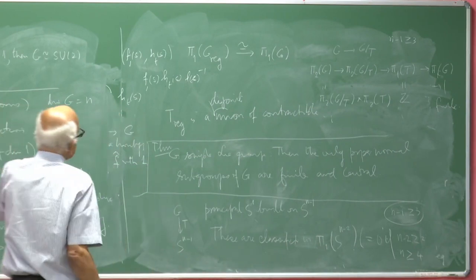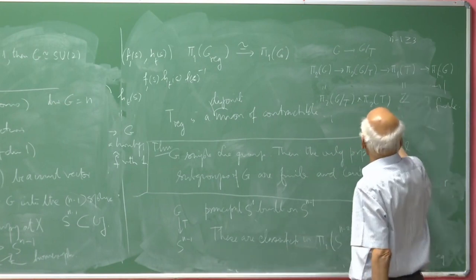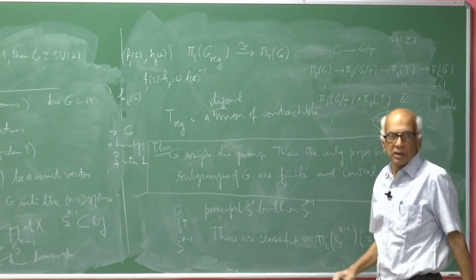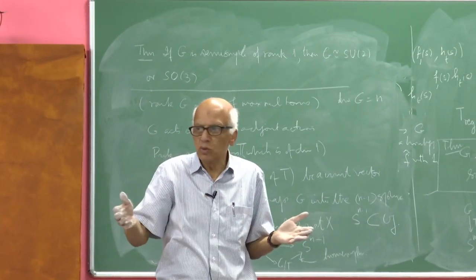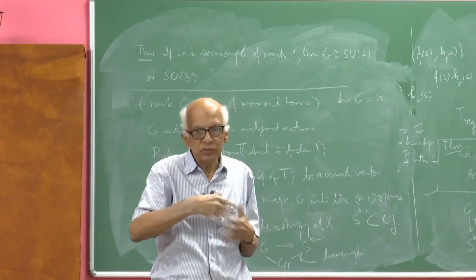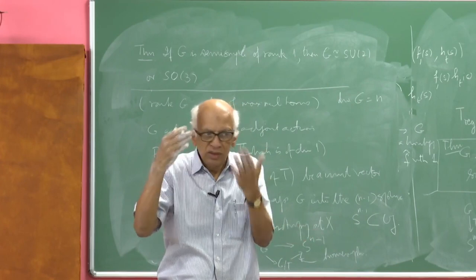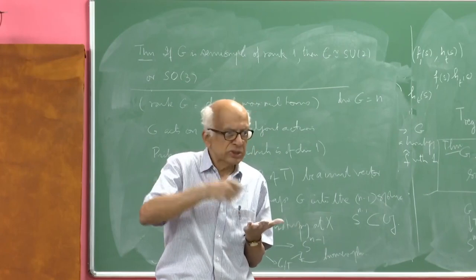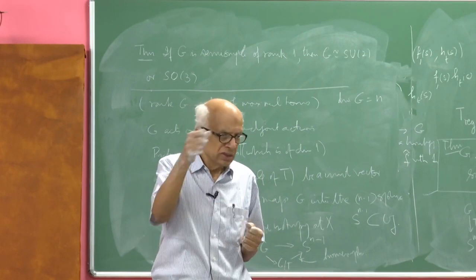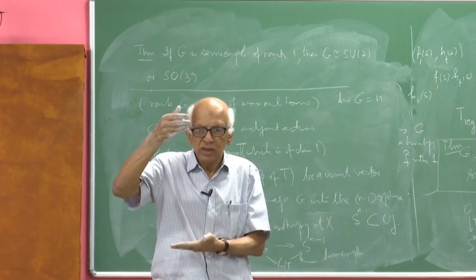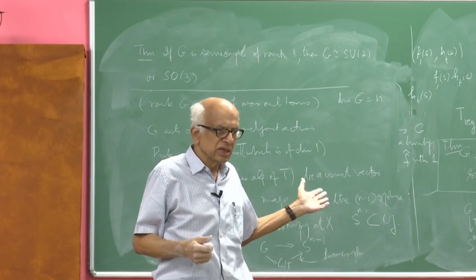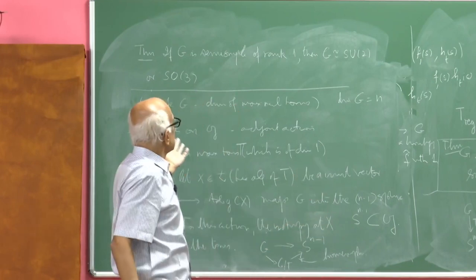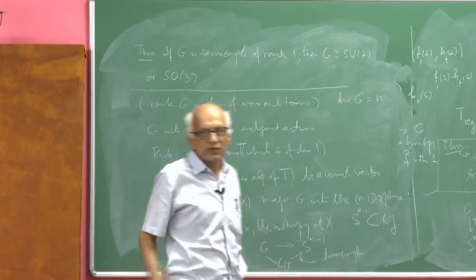So the only possibility is n−1 = 2, i.e., n = 3. The group G has dimension 3. The adjoint action preserves the inner product, so it maps G → SO(3). This is a homomorphism and a covering map modulo the center. Since SO(3) has only one non-trivial covering, namely SU(2) (via unit quaternions acting by inner conjugation), the group G is either SU(2) or SO(3).